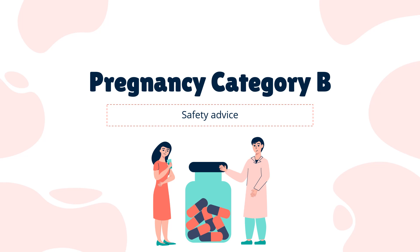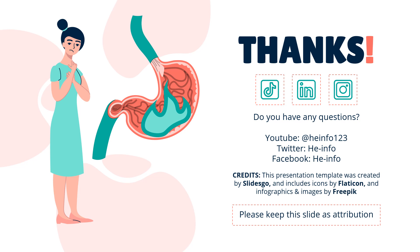Safety Advice: Alosetron is a US FDA Pregnancy Category B medicine. That's all the information about alosetron we collected. Thanks for listening. Don't forget to like, share, and subscribe to the HeInfo channel if you like this video, to get more health information updates.